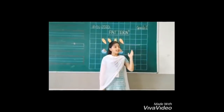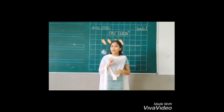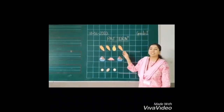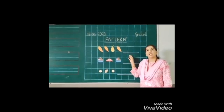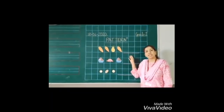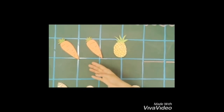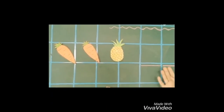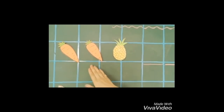Children, let us move to the picture pattern. To play this game, we have to solve today's picture pattern. A pattern is an object which is repeated in the same order. Now children, look at this picture and we have to solve the missing pattern. So let us begin.